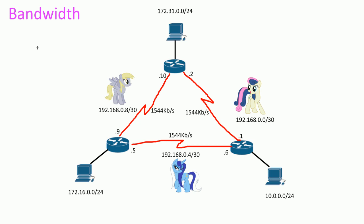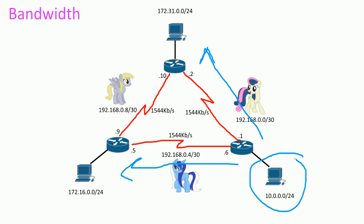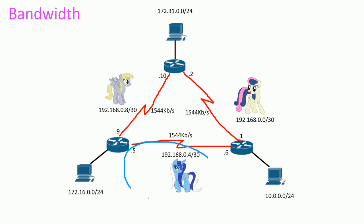Routing protocols, if you don't know by now, tell other routers what networks they have directly connected. So this router knows about the 10 network and tells others: 'hey, you want to get to this network over here, go this way.' They just exchange routes with everybody so everybody knows everybody.